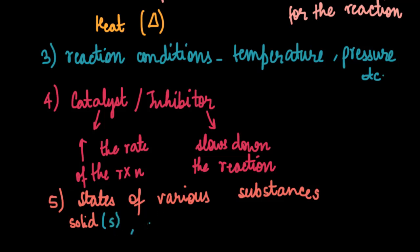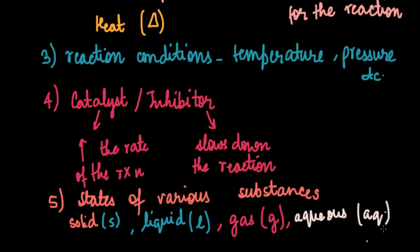Then we have liquid, which can be denoted by L. Next we have gas, gas can be denoted by G. And we have another state, which is aqueous state. Aqueous is denoted by aq. So what is aqueous state? Whenever a substance is dissolved in water, we call it as an aqueous substance and it forms an aqueous solution.